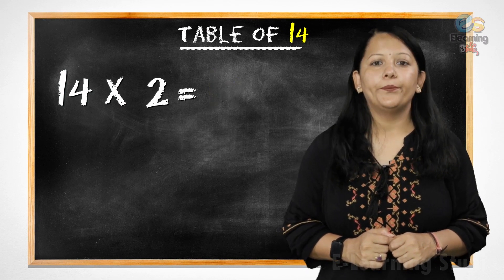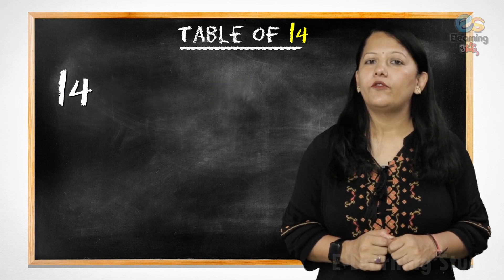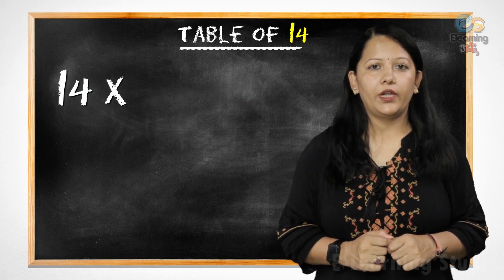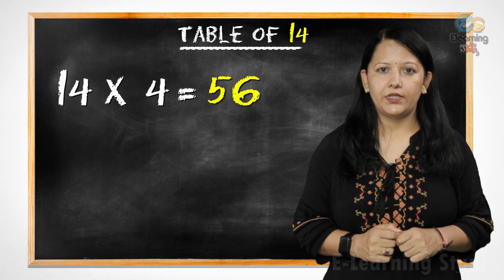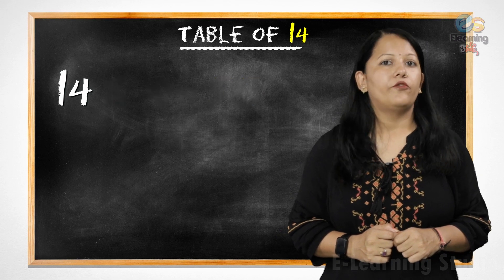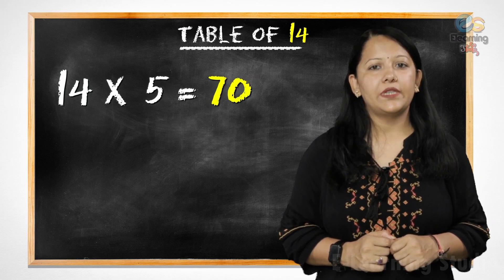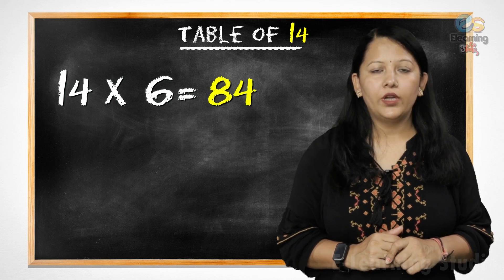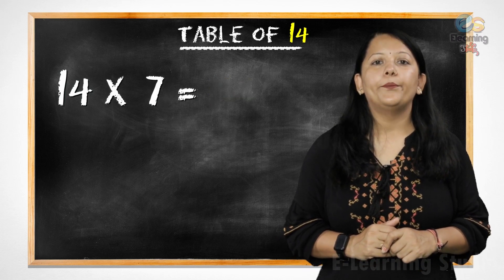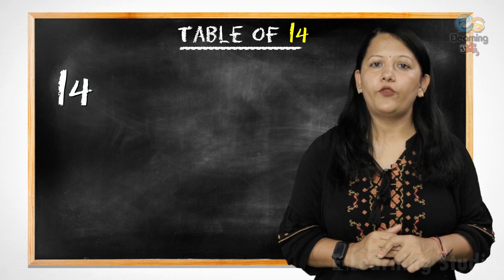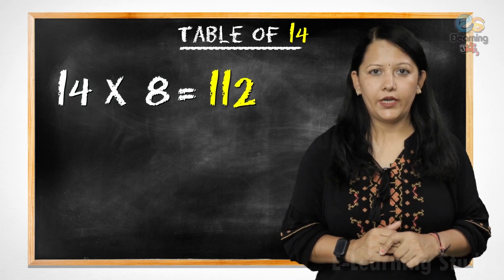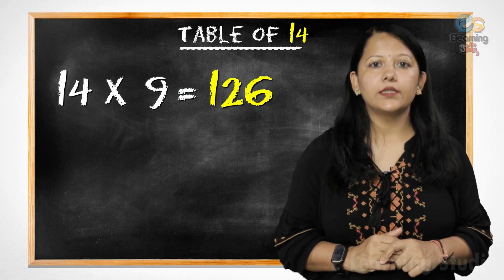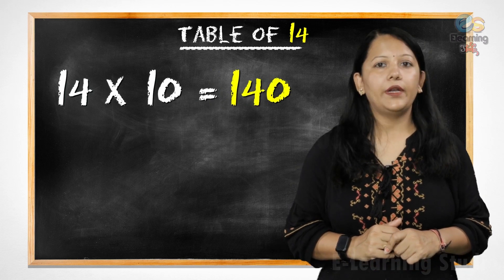14 twos are 28, 14 threes are 42, 14 fours are 56, 14 fives are 70, 14 sixes are 84, 14 sevens are 98, 14 eights are 112, 14 nines are 126, 14 tens are 140.